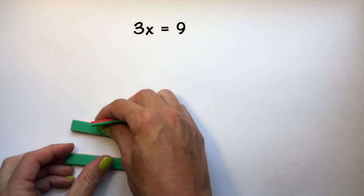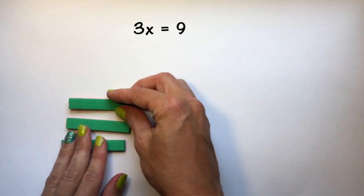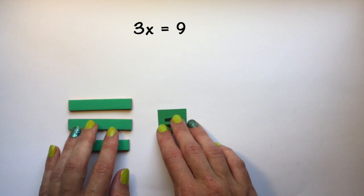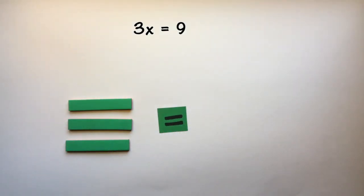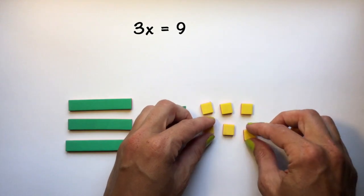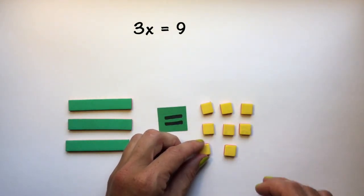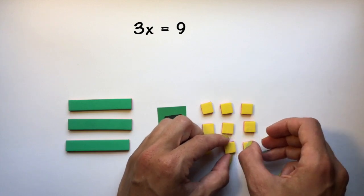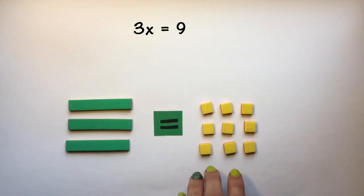Let's look at the problem 3x is equal to 9. I'm going to model with 3x tiles on the left side of my equation and 9 integer tiles on the right side of my equation. So I can see that 3x is equal to 9.